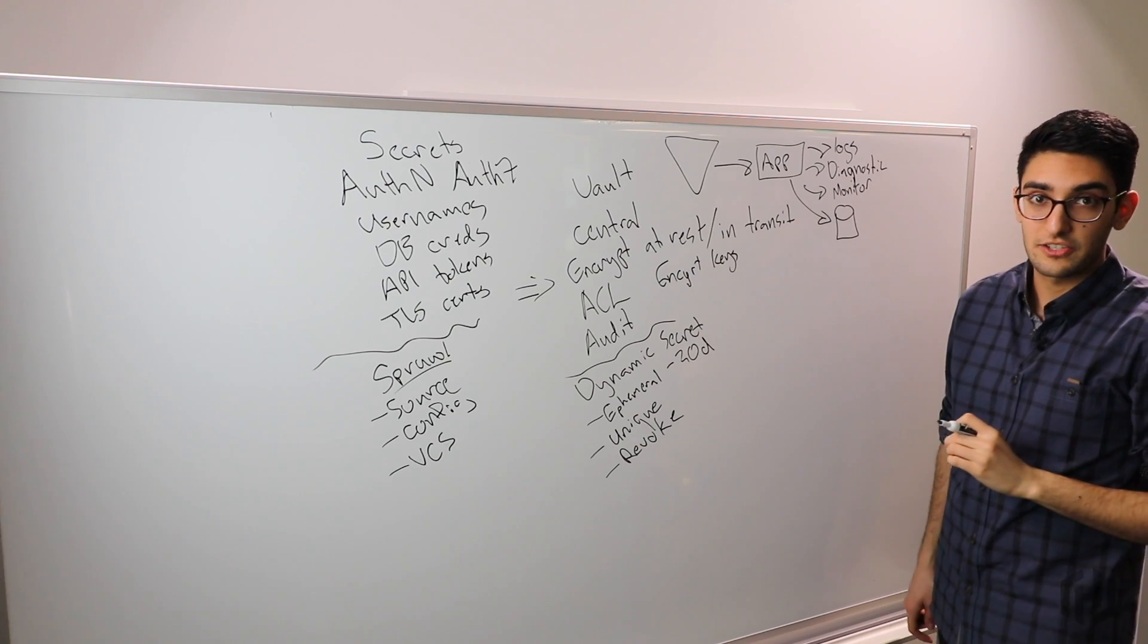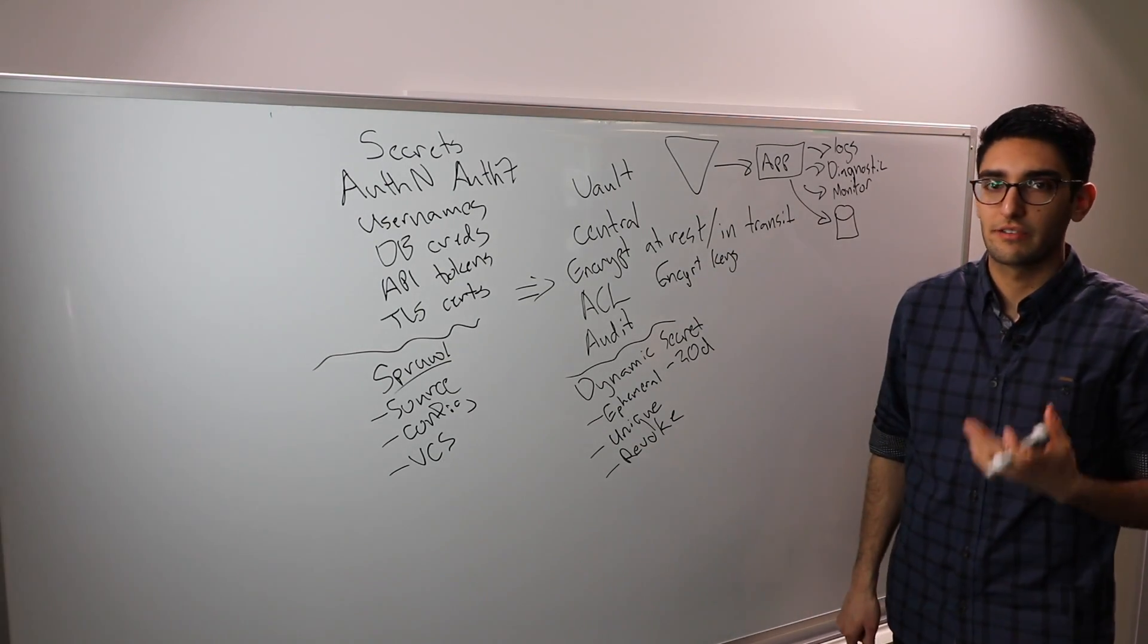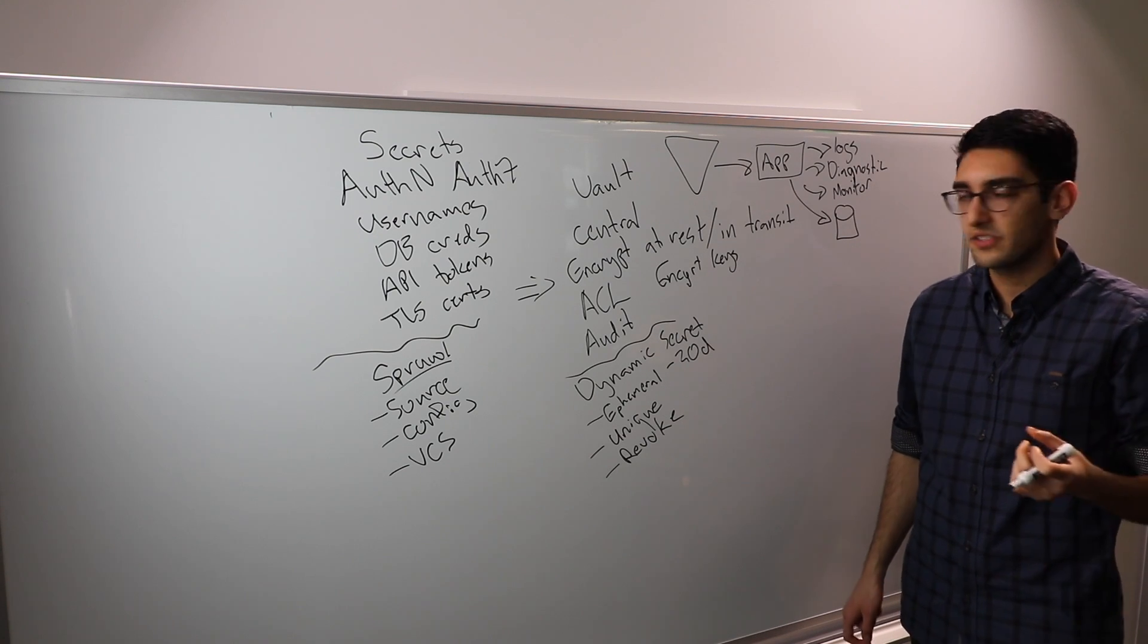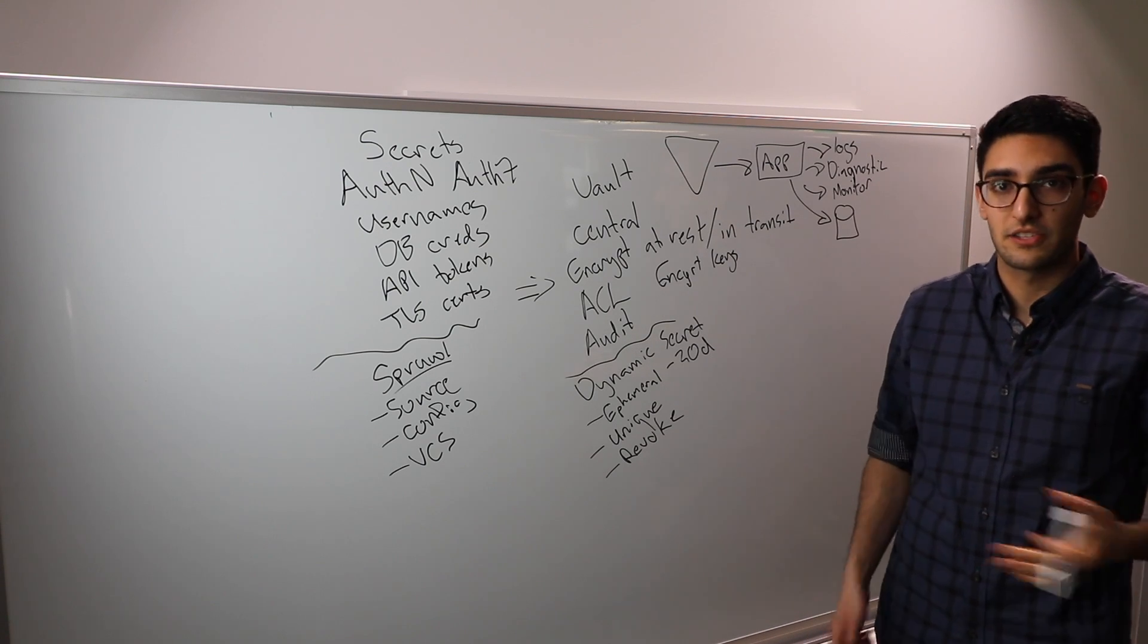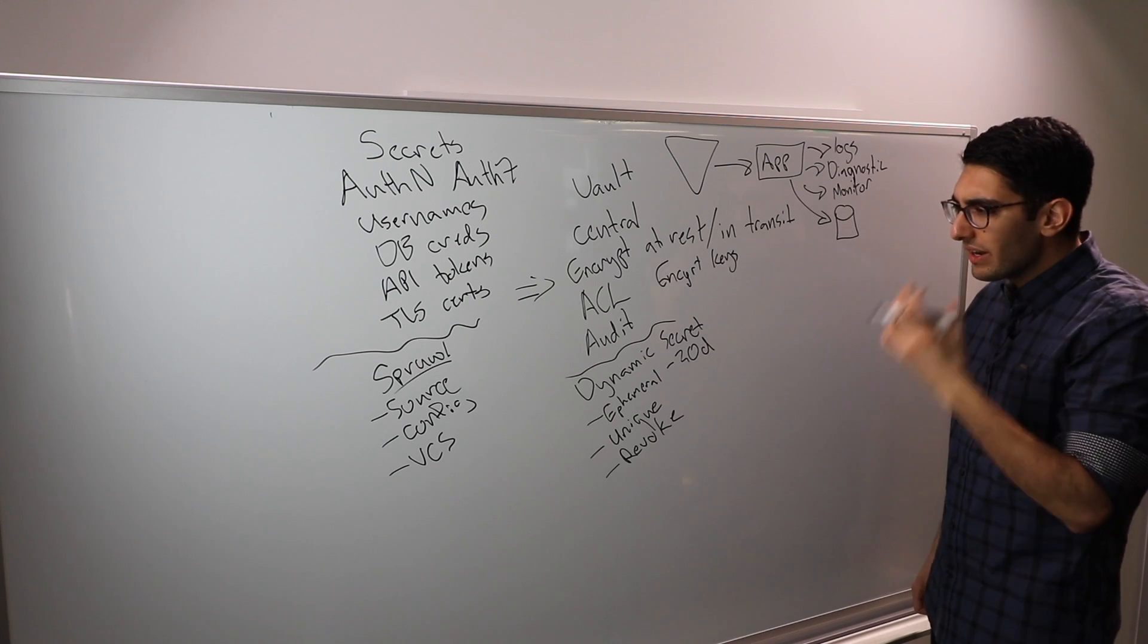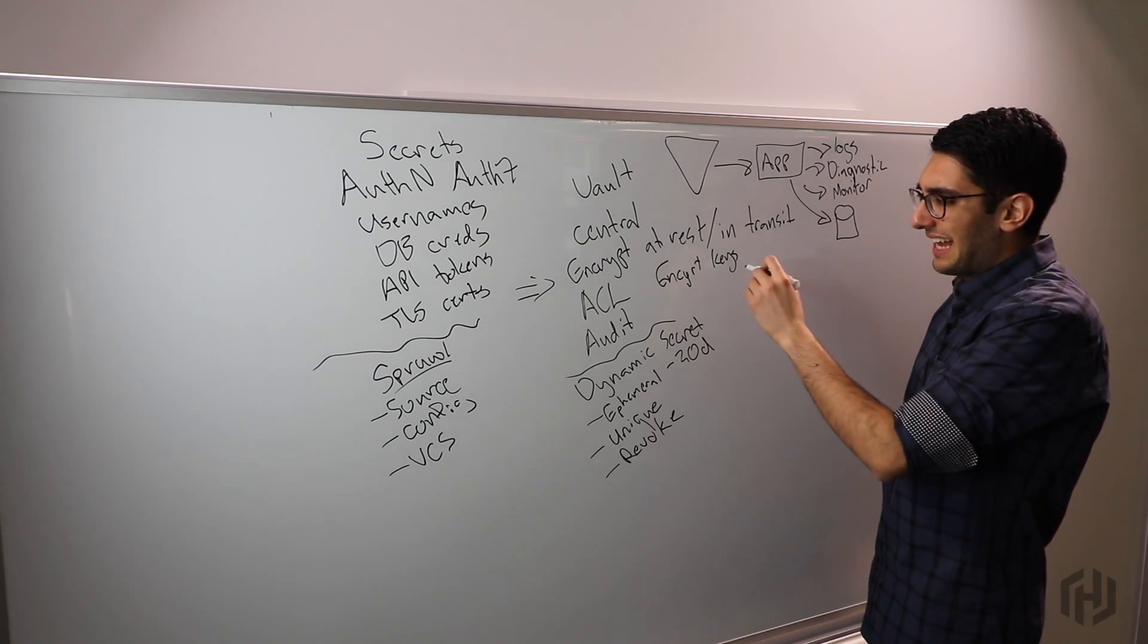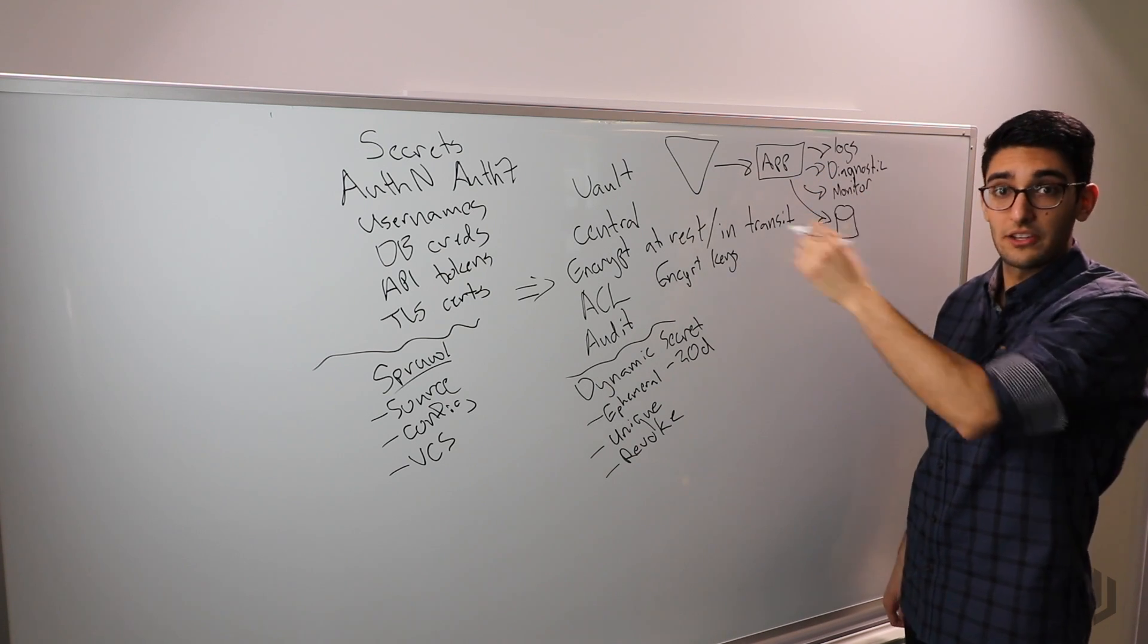What we find is applications generally don't implement cryptography correctly. There's lots of subtle nuances and it's easy to get wrong. With these kind of mistakes, oftentimes it compromises the whole cryptography when those mistakes are made. One of the challenges we often look at is how do we get away from just storing an encryption key and handing it to the application and assuming the app will do cryptography right.